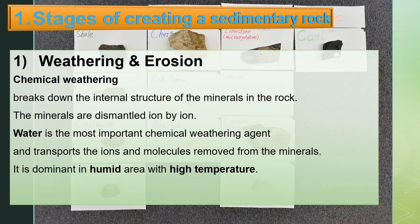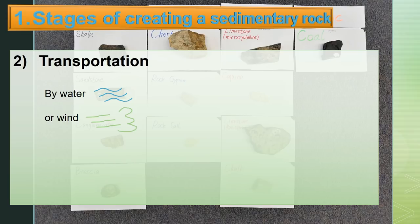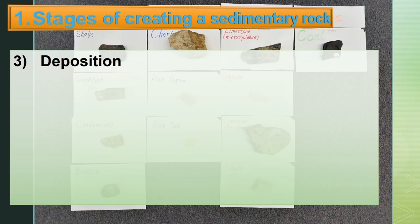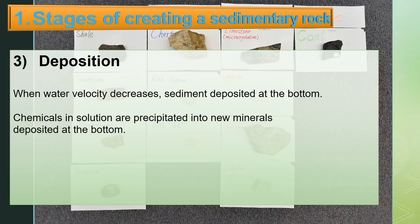Chemical weathering is dominant in humid areas with high temperatures, such as Alabama. Sediments are then transported by water or wind. During deposition, when water velocity decreases, sediment is deposited at the bottom. Chemicals in solution are precipitated into new minerals and also deposited at the bottom.